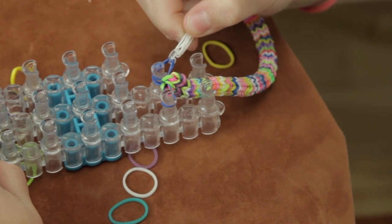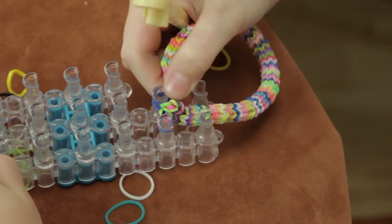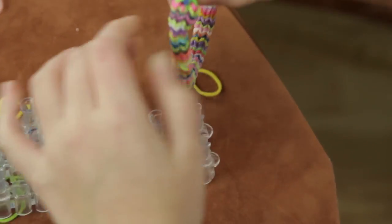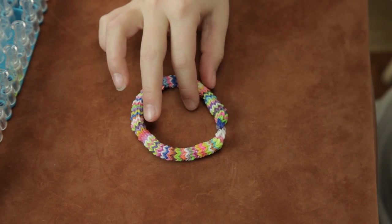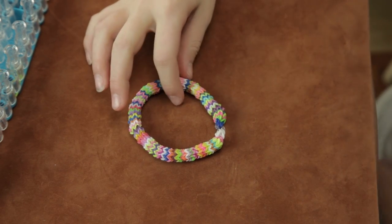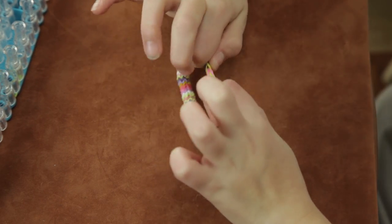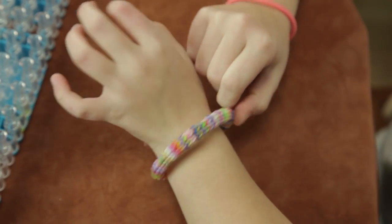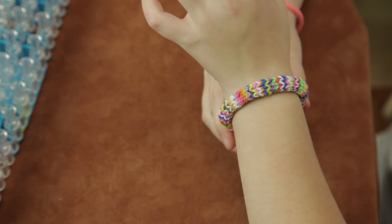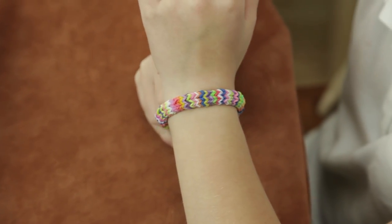Okay, so now that I got the C-clip on the other end, I connected it to this end, so now you can pull it off. This is the finished six-pin fishtail. You have to stretch it out because some might be hanging. You just stretch. I hope you enjoyed this video. I hope it helped you. Subscribe. Bye.